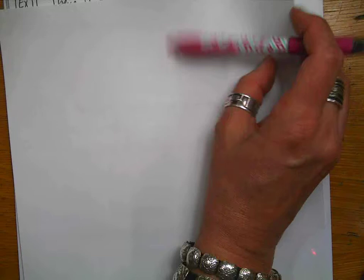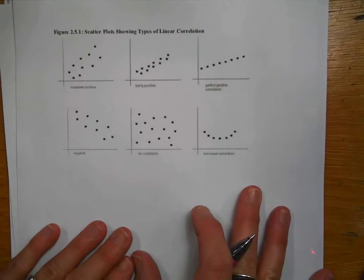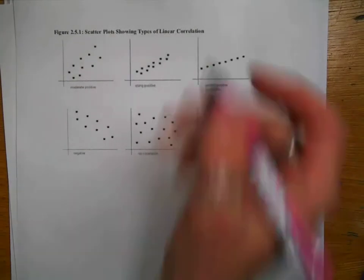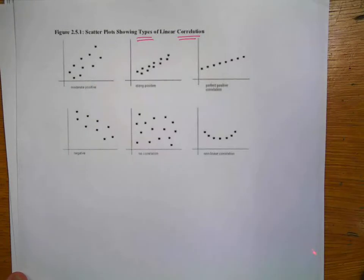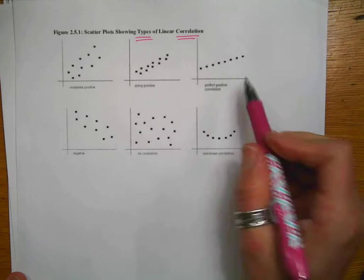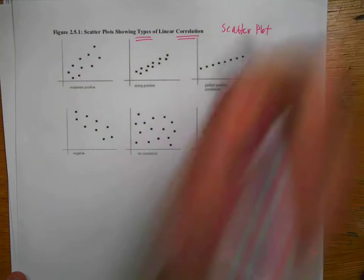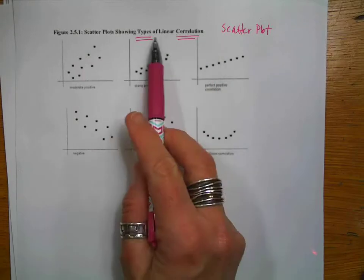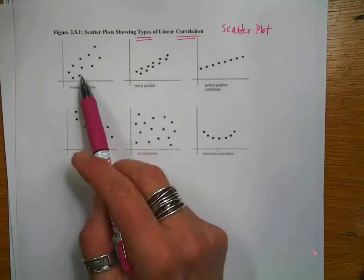So a statement that you will hear a lot in statistics is that you have to be very careful. Just because two variables correlate, it does not necessarily mean that they're going to cause causation. The next thing I have for us is going to be a graph, and these are in your book, but they show the relationships and talk about types of correlations.